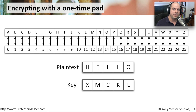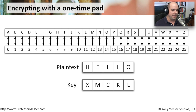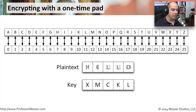This key will change every time we send a message, so even if we send the word 'hello' again next time, the ciphertext will be completely different because the key will be different. Since we can't perform mathematics on letters, we need to convert them to numbers using our conversion chart. Converting 'hello' gives us 7, 4, 11, 11, 14. Converting the key XMCKL gives us 23, 12, 2, 10, 11.